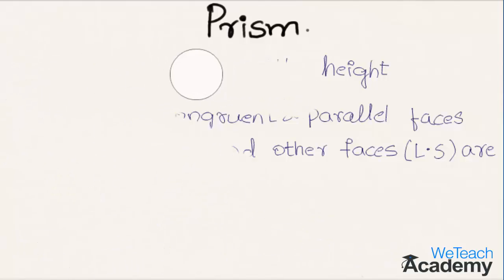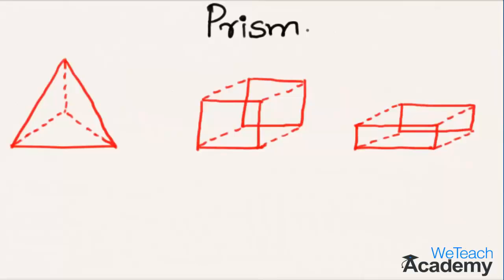Now let me explain this concept with a few prisms. Here we have some rough diagrams of prisms. As stated, a solid having two congruent and parallel faces called the bases, with lateral surfaces as parallelograms formed by joining the corresponding vertices, is called a prism.